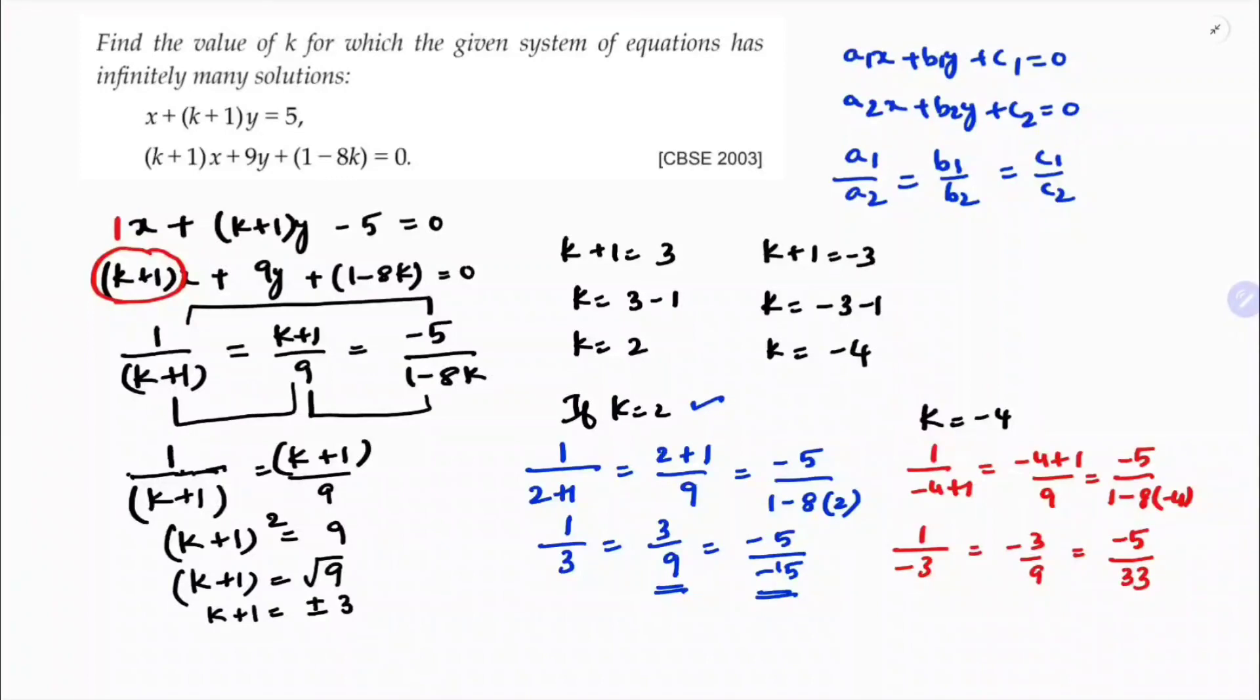So here 1 by 3 equals 1 by 3, but 1 by minus 3 here and here, and here you are not getting 33. So k equals minus 4 is not a solution, so k equals 2 is the answer.